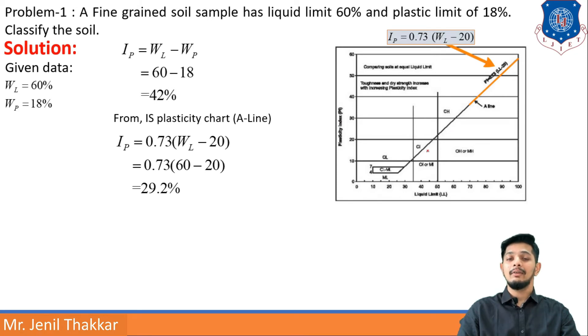So line is coming like here somewhere and my IP value is coming out as 42%. In this case IP value is coming out as 42%, so we can clearly see that 42% is greater than 29.2%.